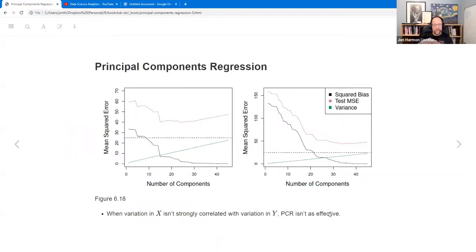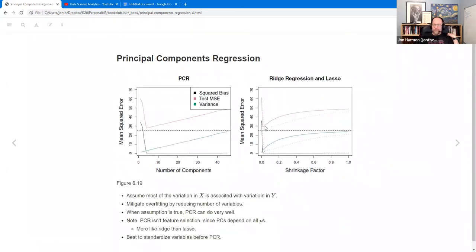When the variation in Y or in X isn't strongly correlated with the variation in Y, it's not as effective. This is actually the figure they show first for PCR and like, you know, it does like, especially this one, the best is almost all of the variables here. So the number of components is almost equal to the number of predictors. And so it's not as good of a case for PCR in this case. And they show that the ridge and lasso do better for these than PCR does, versus on this one PCR does slightly better than both the ridge and the lasso.